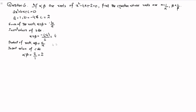The required roots are alpha plus 1 over alpha and beta plus 1 over beta. So the sum of the roots of the required equation, represented by S, is equal to alpha plus 1 over alpha plus beta plus 1 over beta. We can combine alpha plus beta and write S as alpha plus beta plus 1 over alpha plus 1 over beta.